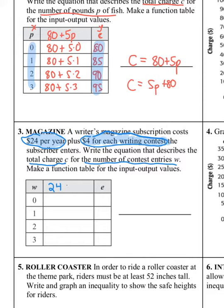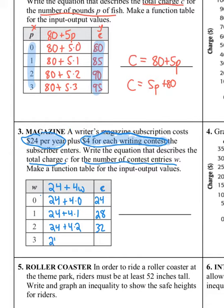The $24 is a constant that doesn't change, and W is the number of writing contests, so you add 4 times W. Enter zero contests: $24 plus 4 times 0 = $24. Enter one: $24 plus 4 times 1 = $28. Enter two: $24 plus 4 times 2 = $32. Enter three: $24 plus 4 times 3 = $36.